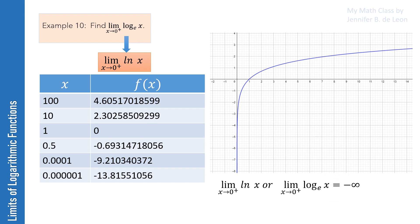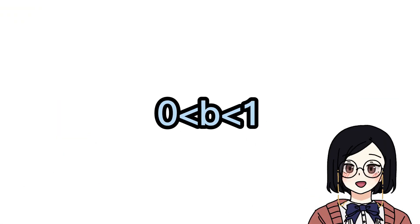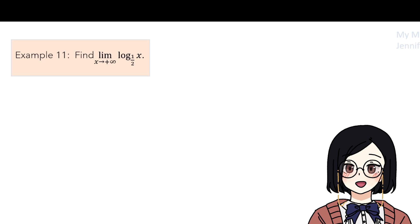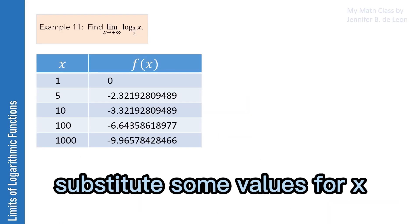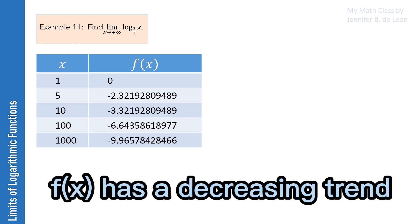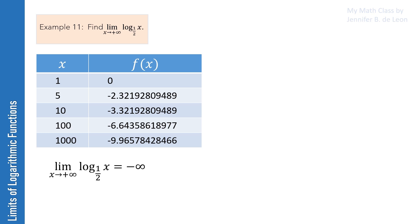On the other hand, the limit of ln x as x approaches positive infinity is positive infinity. This time, let's find out the trend when b is between 0 and 1. Find the limits of the logarithm of x to the base 1/2 as x approaches positive infinity. Replacing x with some values written in increasing order, we can see that the value of the function has a decreasing trend. Hence, the limit of log base 1/2 of x as x approaches positive infinity is negative infinity.